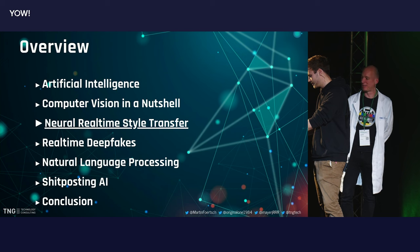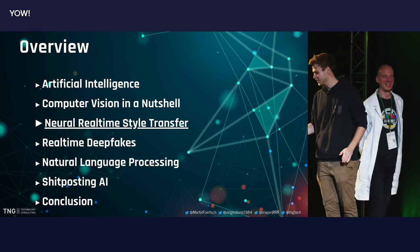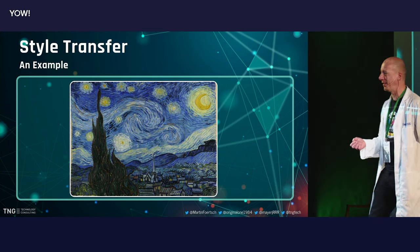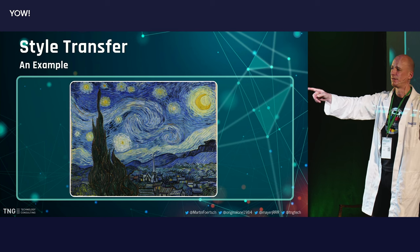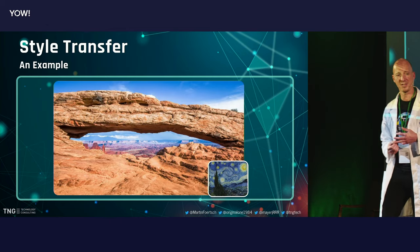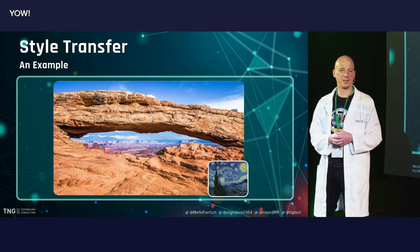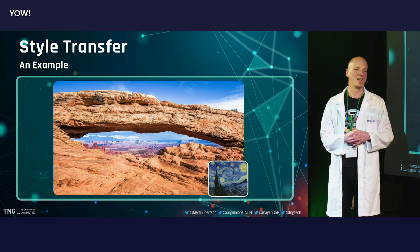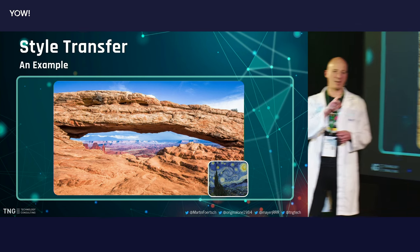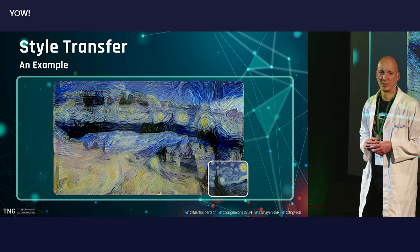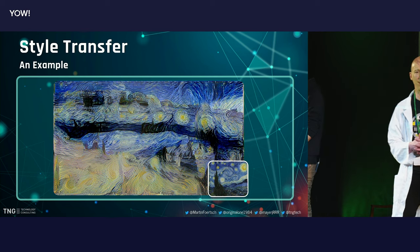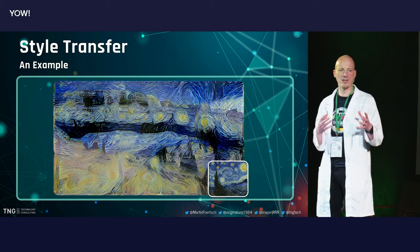So we're going to carry on with the very important topic of neural style transfer. Here we have a beautiful painting by Van Gogh — Starry Night. And here is a photo I took in the USA: Mesa Arch in Canyonlands. What we do now is fade the Mesa Arch into a Van Gogh-like painting, so it looks like Van Gogh was actually at Mesa Arch. This is called style transfer.